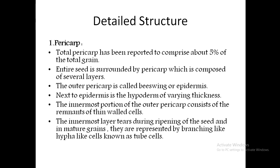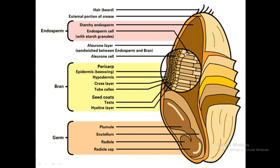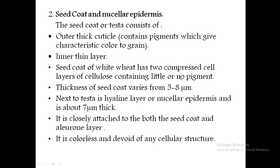In detail, the pericarp constitutes around 7–5% of the total wheat grain. The entire grain is surrounded by the pericarp, which is composed of several layers. The outer pericarp is the epidermis, made up of tube-like cells. The second layer is the seed coat, which contains pigments and is beneath the pericarp. It is followed by the aleuron layer.